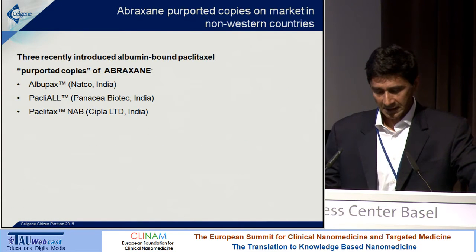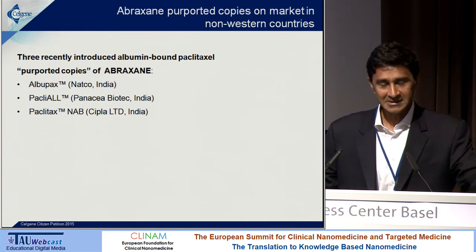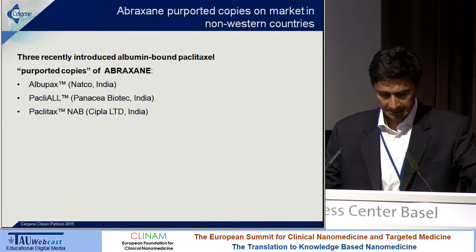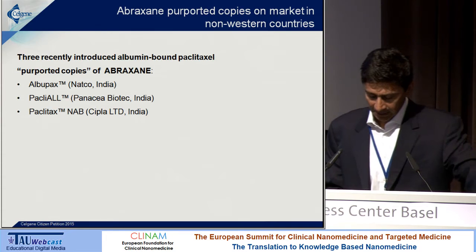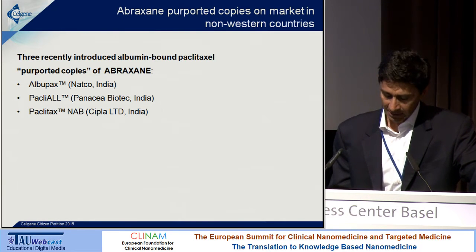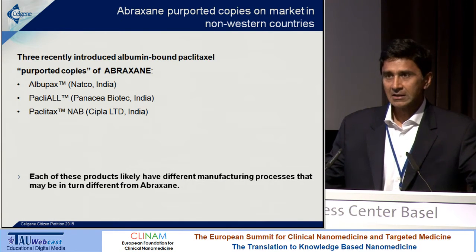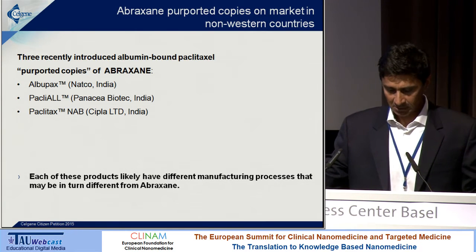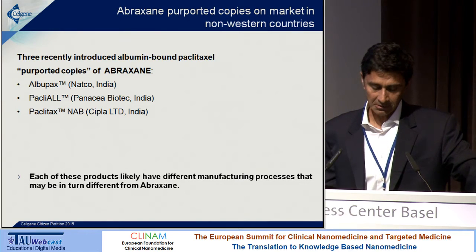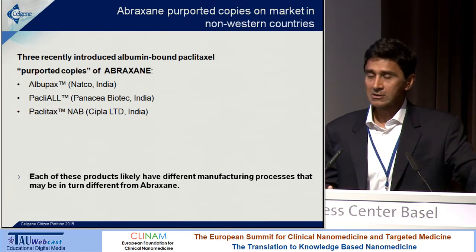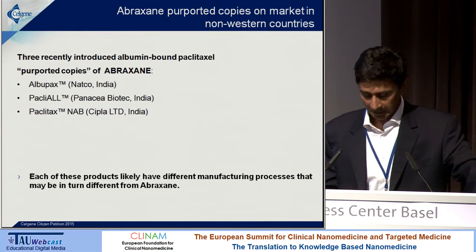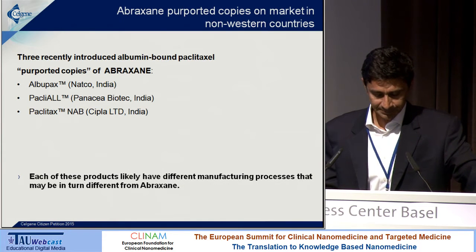There are copies of Abraxane — we call them purported copies because based on our analysis we don't believe they're true copies. There are in fact three copies of this product in India: AlbiPax, Paclion, and Paclitax. We've analyzed all of them and I'll show some results here. We've filed a citizen petition where we've publicized these results, so I encourage you to look at that if there's interest. It's very likely that each of these products has a different manufacturing process from each other, and in turn probably different from Abraxane, as our process is proprietary and trade secret.